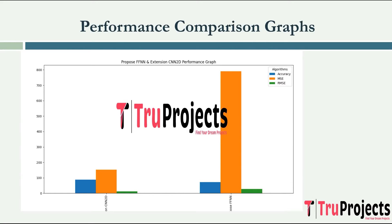Accuracy represents the proportion of correctly predicted flood occurrences to the total predictions made. In the graph, the x-axis represents algorithm names and the y-axis represents error rate.